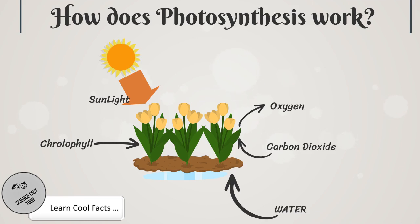Three: carbon dioxide from the atmosphere. Four: chlorophyll from leaves, which is a green pigment present mainly in the leaf.